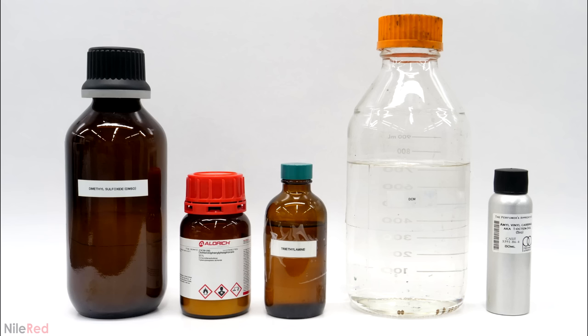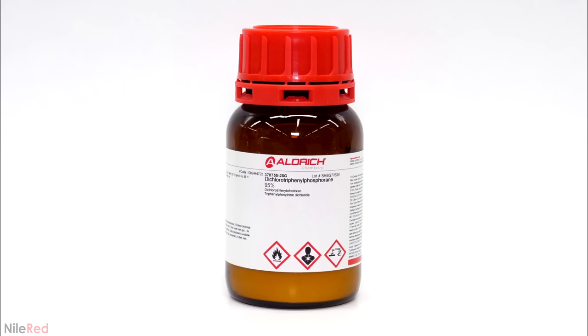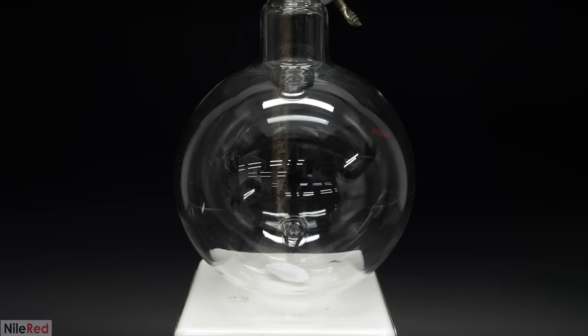I was able to find a paper though that outlined a method that supposedly worked. So I decided to try it out and these were the main chemicals that I needed to do it. I was able to find most of them online from places like eBay but this one called triphenylphosphine dichloride I couldn't find anywhere. I generally try to avoid it but in this case, I ended up having to order it from Sigma. But anyway, with all that being said, it's finally time to get started.